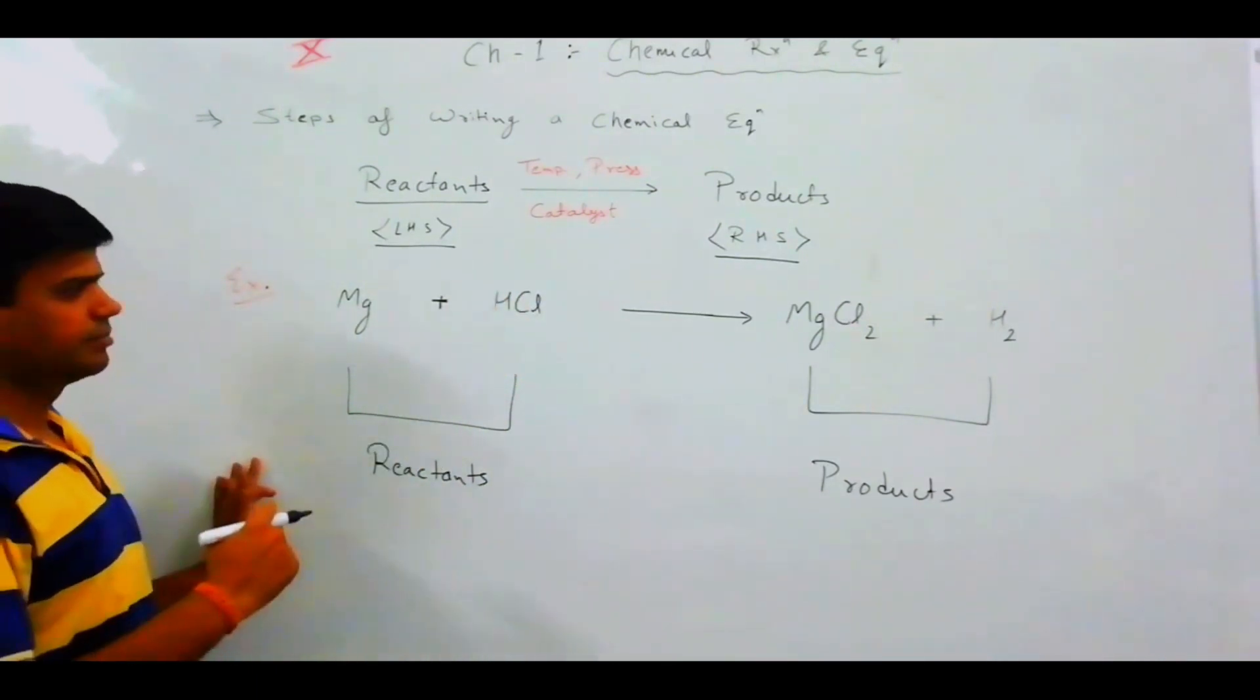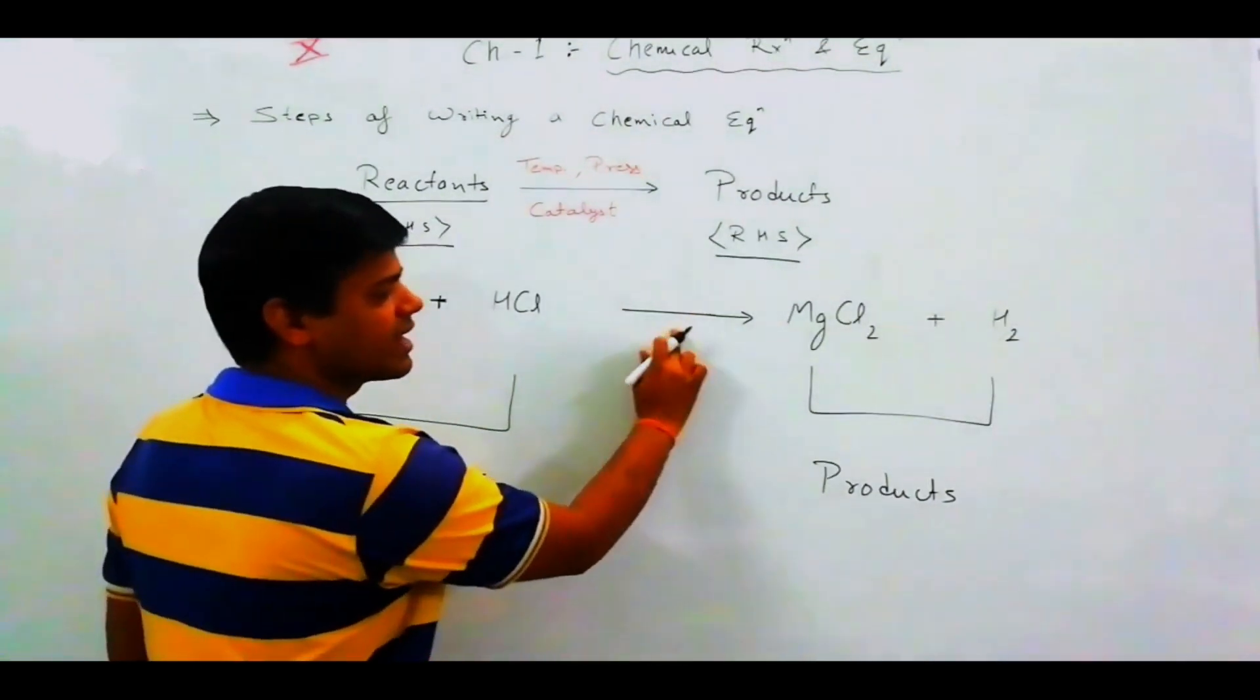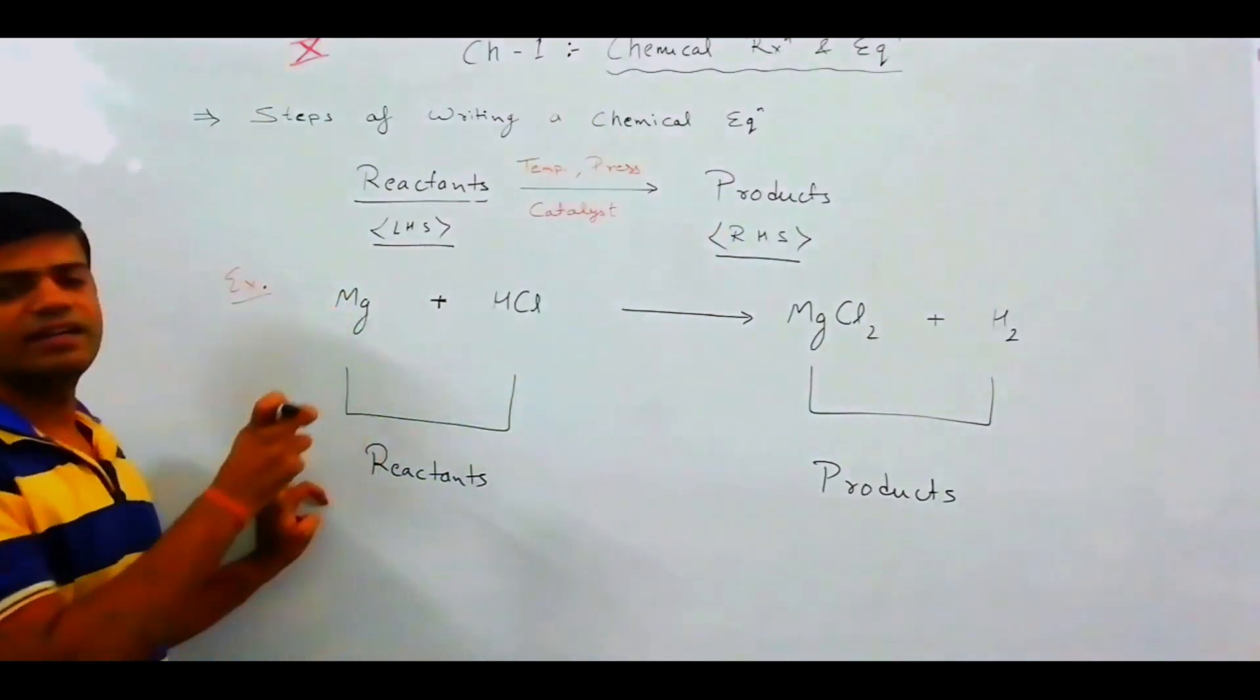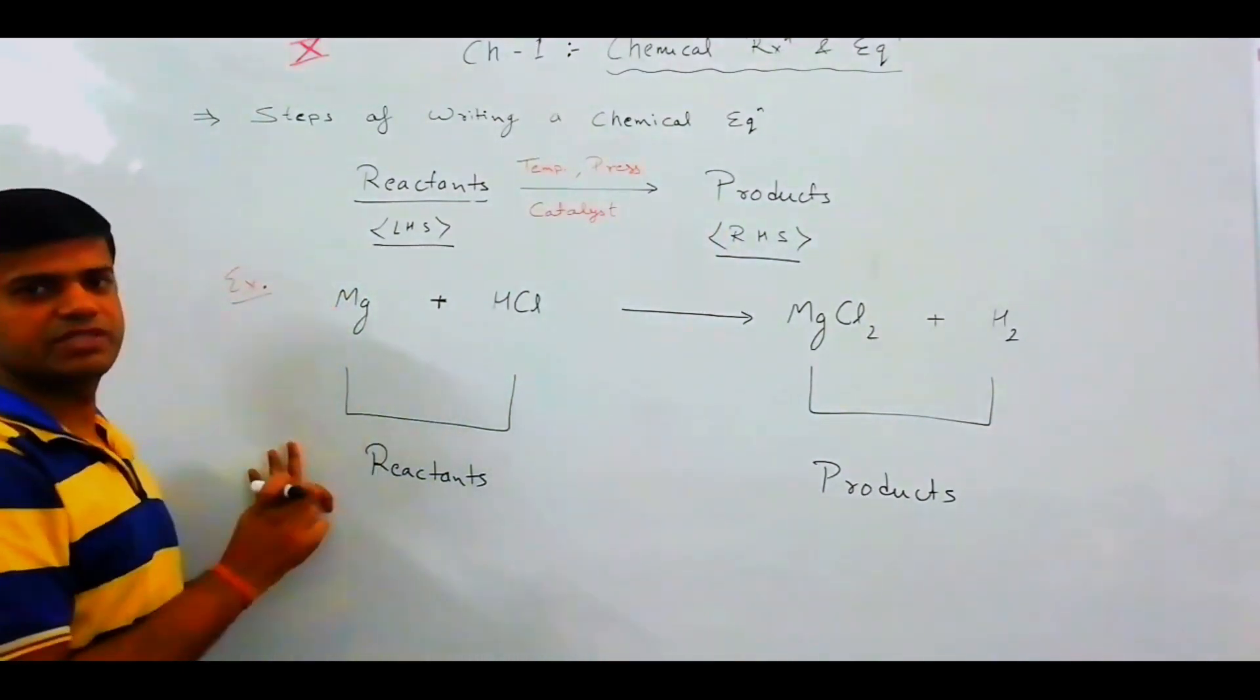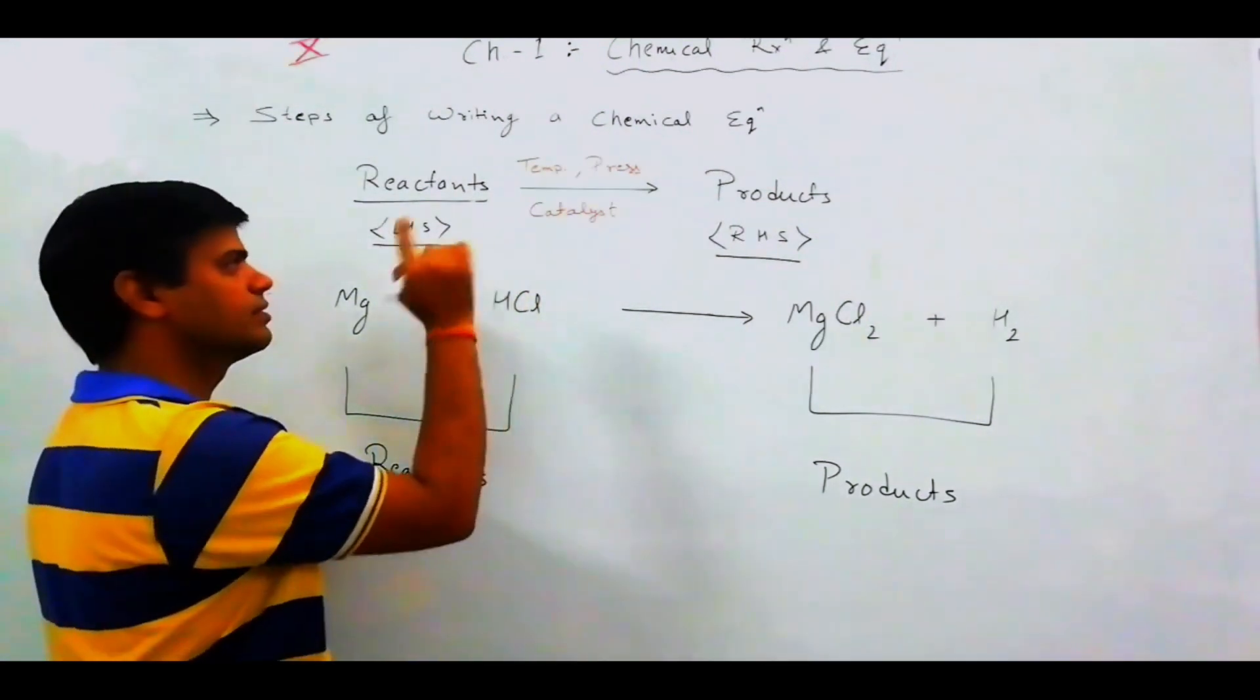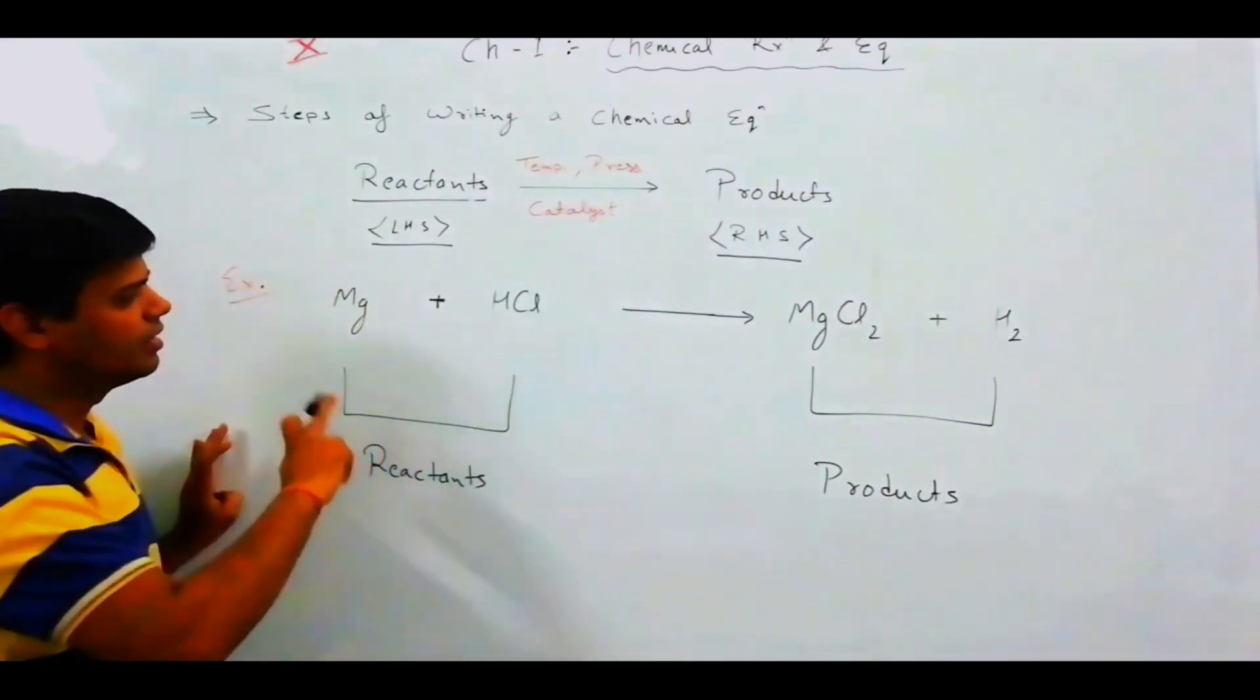Next step, third step, put arrow sign between reactant and product. Reactant and product between positive sign use karenge. Third step, fourth step.